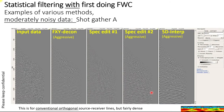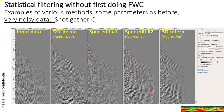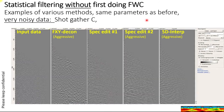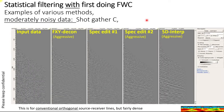Before and after. Here's another shot gather — shot gatherer C. Input data with various statistical methods: it's nice to use these statistical methods because when there is similarity between them, you have confidence in them. This is without first doing the full waveform correction, and then afterwards. I'm a little surprised at the differences here — the shallow looks consistent, but the deep has changed, and you can see the reflection is now more obvious on the deep.